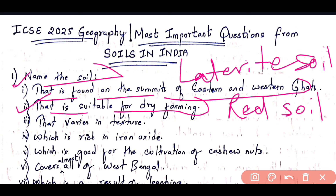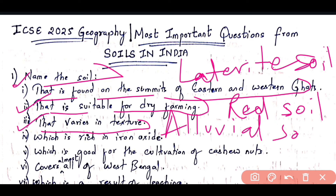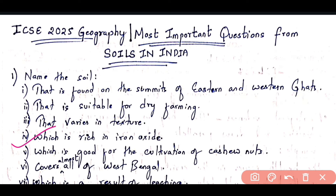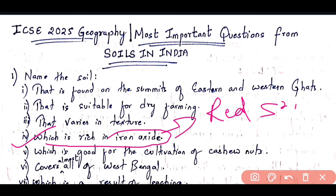Why is red soil red in colour? This is a 'give reason' type question: red soil is red in colour due to the presence of Iron Oxide. Question 3: the soil that varies in texture is alluvial soil. Question 4: the soil which is rich in Iron Oxide is red soil.